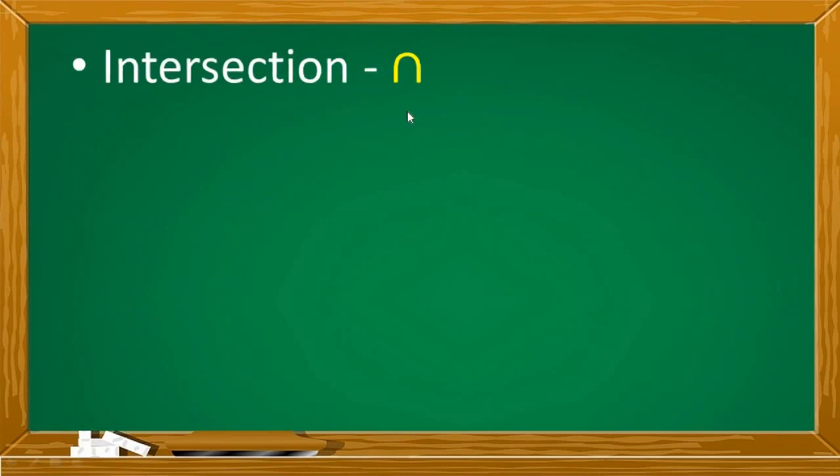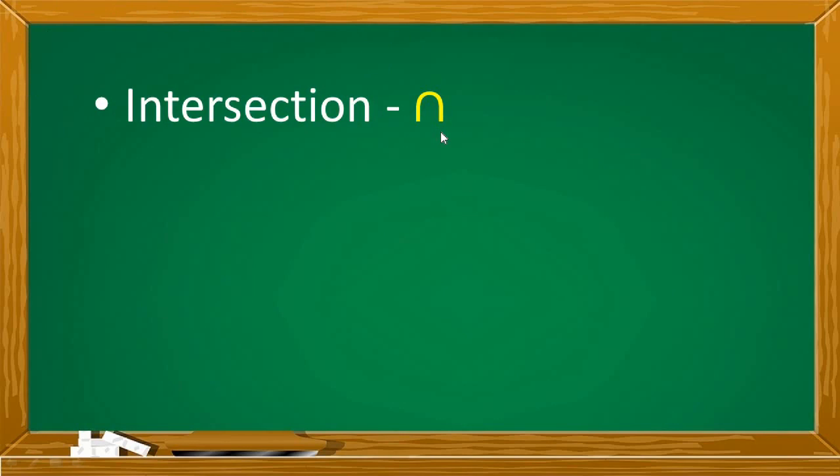Remember, for intersection, the symbol is an inverted U o baliktad na U. At si union, since nag-start siya kay letter U, tandaan, ang symbol niya ay capital letter U rin. Sa intersection na baliktad na U ang symbol, yung mga elements na pareho silang meron or the common elements of two sets. Sa union na letter U ang symbol, you will simply combine the elements, pagsasamahin pero bawal na may maulit. Isang beses lang isusulat if may nauulit man.